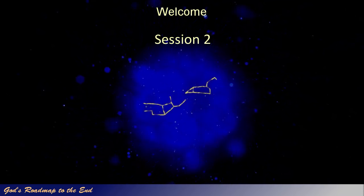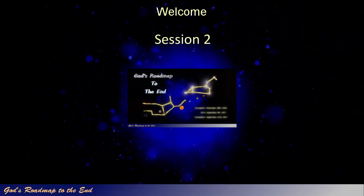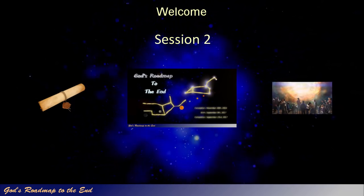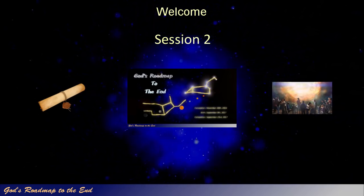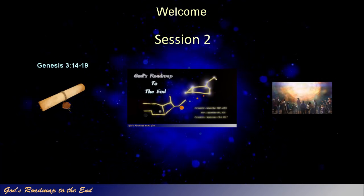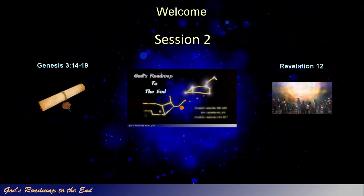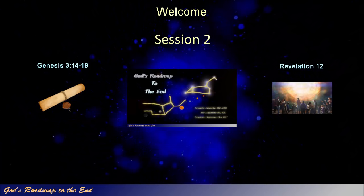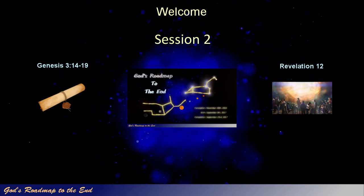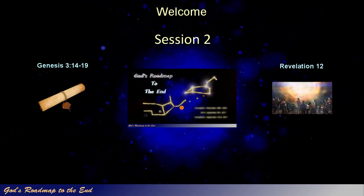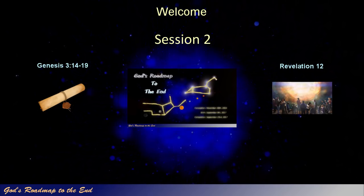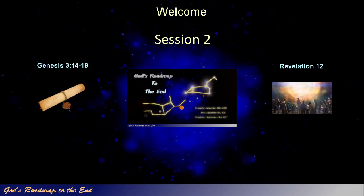If you watched the previous video, in which we discovered how God revealed to us the identity of the prophecy and the vision that Daniel was told to seal up, you will remember that the specific prophecy is found in Genesis 3 verses 14-19, and the specific vision was given to John in Revelation 12. If you have not watched the previous video, I would encourage you to do so, as it provides important background information, allowing you to understand where we pick up today.